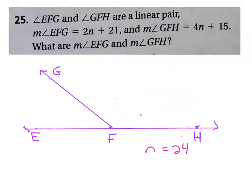What I want to do is write each expression separately and plug them in. Ideally, if we did it right, the two angle measures we get will sum up to 180 when we add them together. So 2N plus 21, with N being 24, this is 48. 48 plus 21 is 69 degrees.